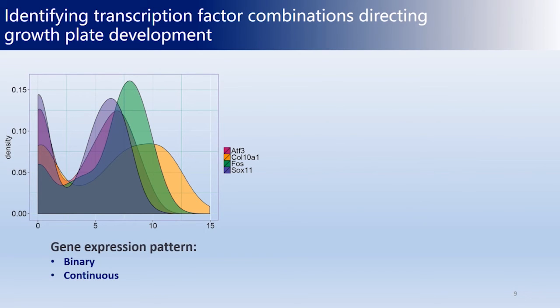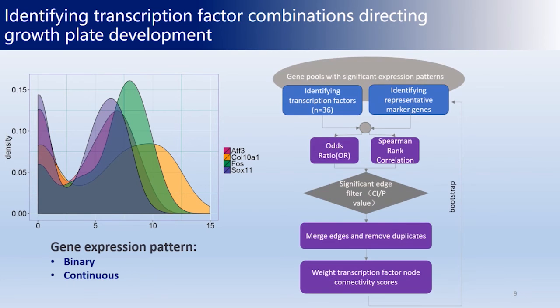We found both binary and continuous expression patterns. To account for correlation between both expression patterns, CNOVA methodologically calculates the connectivity score by interpreting both the odds ratio and Spearman rank correlation, which comprehensively reflects the co-expression patterns among TFs and genes across the timeline.